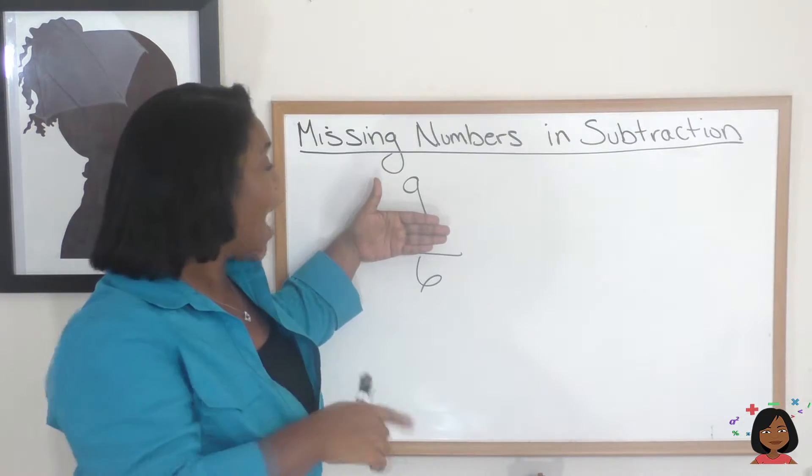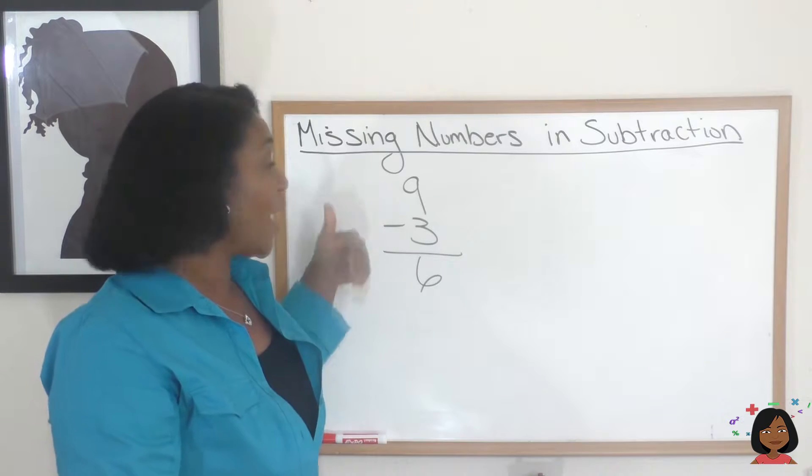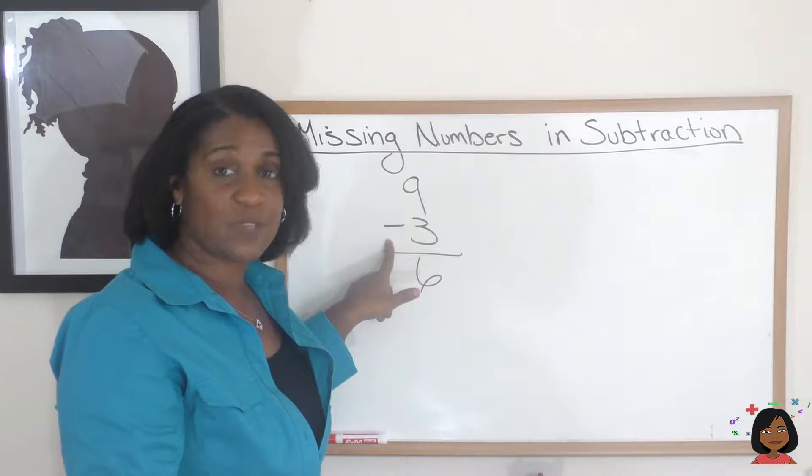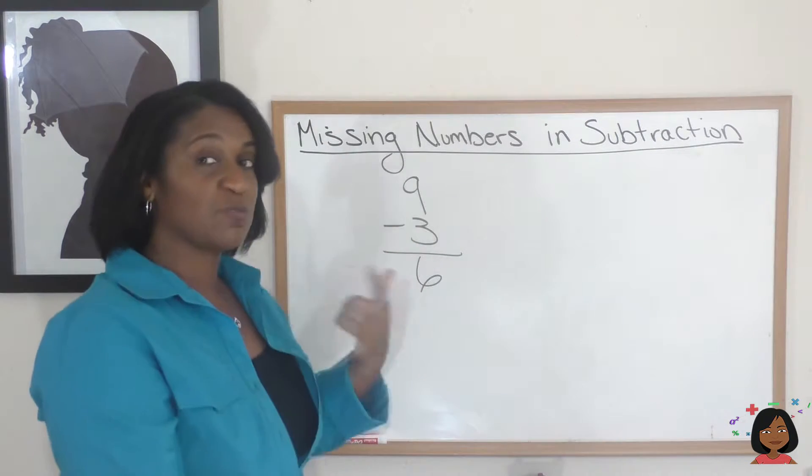You've got it. I could subtract 9 minus 6, and that would give me 3. So I could use subtraction to figure out the number that's in this place, which is what's called the subtrahend, if you remember correctly. So I could use subtraction.